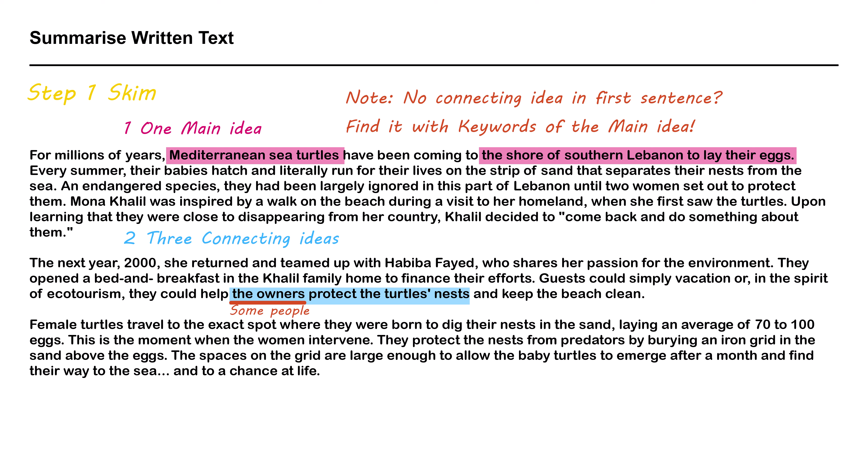Now, this sentence — the owners protect the turtles — is not clear to us yet. I mean, who are the owners? For now, don't worry. Just write the connecting idea as 'some people protect the turtles.' Now, let's find our second connecting idea by looking at the first sentence of the next paragraph. And our second connecting idea is: the turtles dig their nests into the sand. From looking at the first sentences of the paragraphs, we only have two connecting ideas. And remember, ideally, we want at least three.